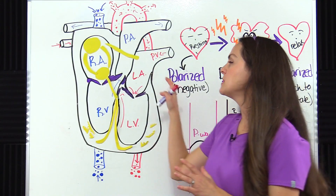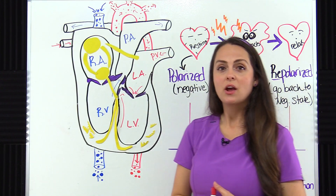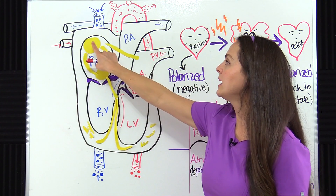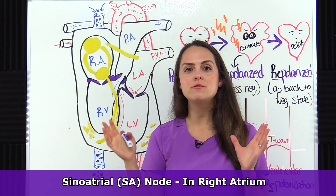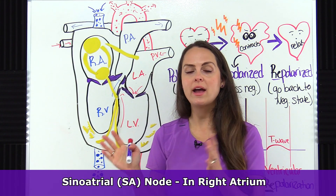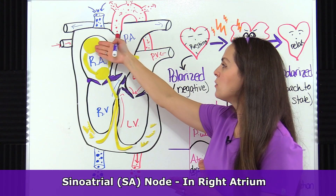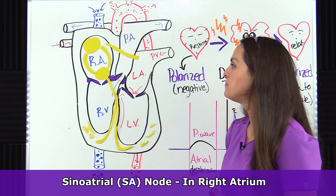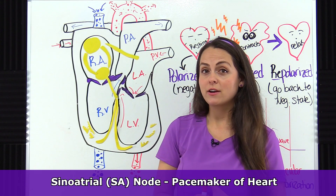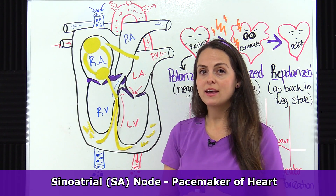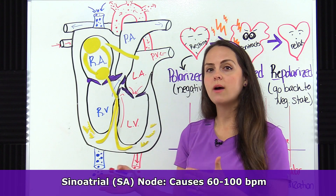Now let's look at the specific parts of the electrical conduction system. Normally everything should start here in the SA node. The SA node stands for sinoatrial node and it's located in the right atrium in the upper part of it. We like to refer to this as the pacemaker of the heart because it causes your heart to beat at a rate of 60 to 100.